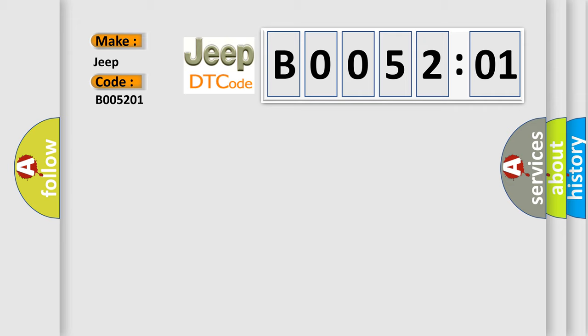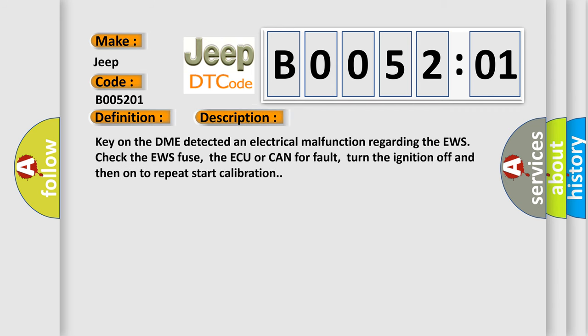The basic definition is timeout EWS electronic immobilizer telegram. And now this is a short description of this DTC code. Key on, the DME detected an electrical malfunction regarding the EWS. Check the EWS fuse, the AQ or CAN for fault, turn the ignition off and then on to repeat start calibration.